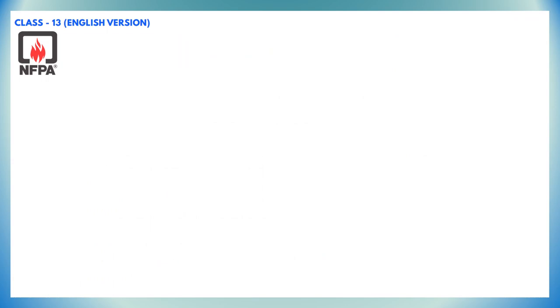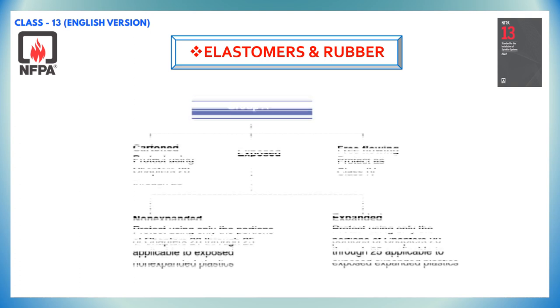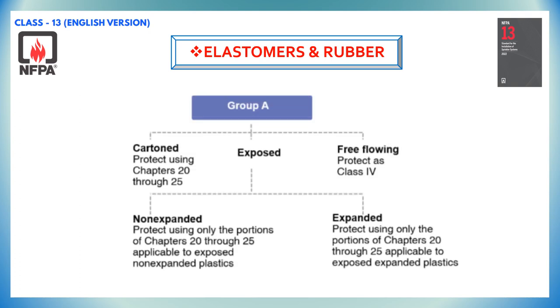Elastomers and rubbers come under group A plastics. We can refer to NFPA 13 2019 edition chapters 20 to 25 for more explanation.